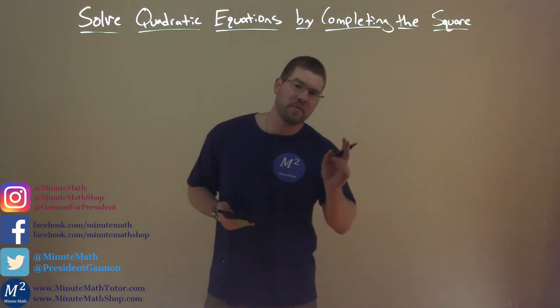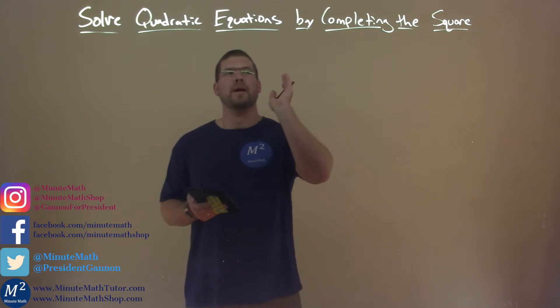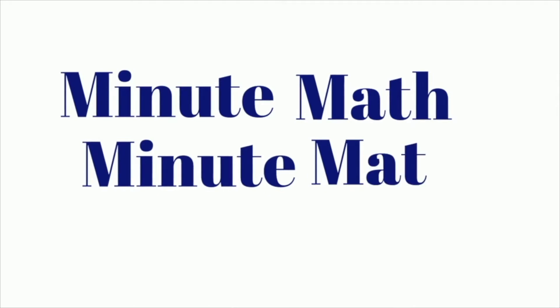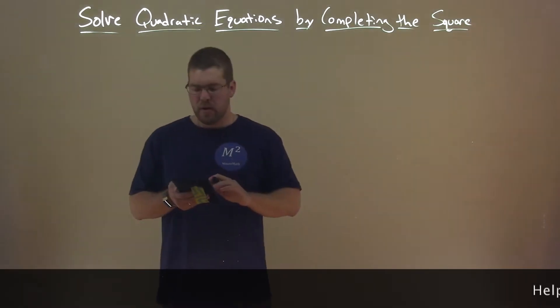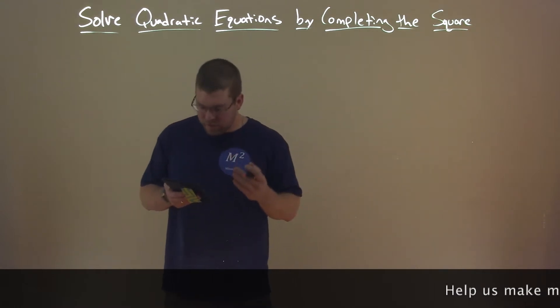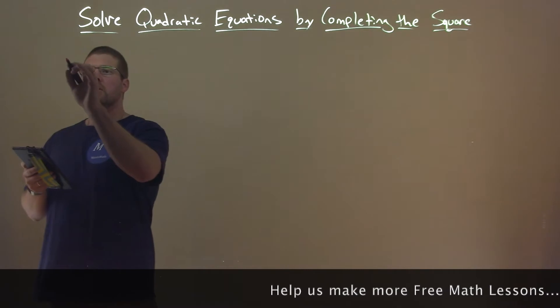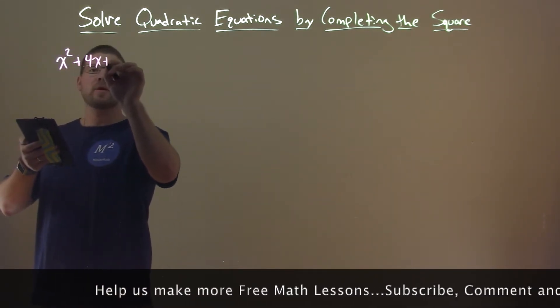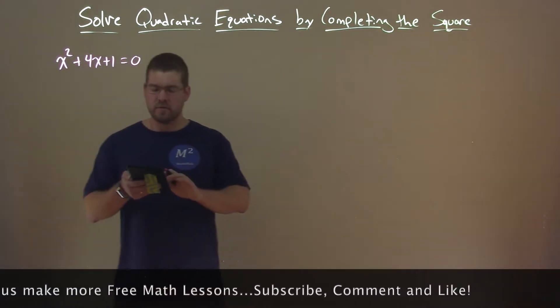Hi, I'm Sean Gannett and this is Minute Math. Today we're learning about solving quadratic equations by completing the square. Let's do this completing the square with some steps and go through the process. So let's say we're given x squared plus 4x plus 1 equals 0, and we're going to use that to complete our square.